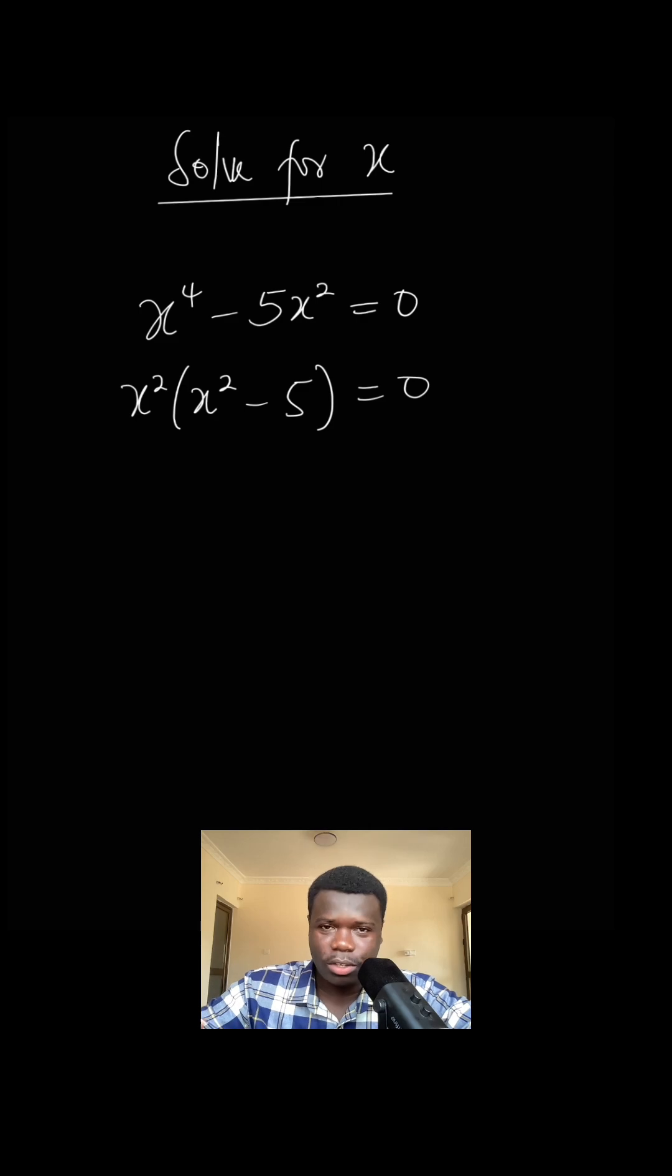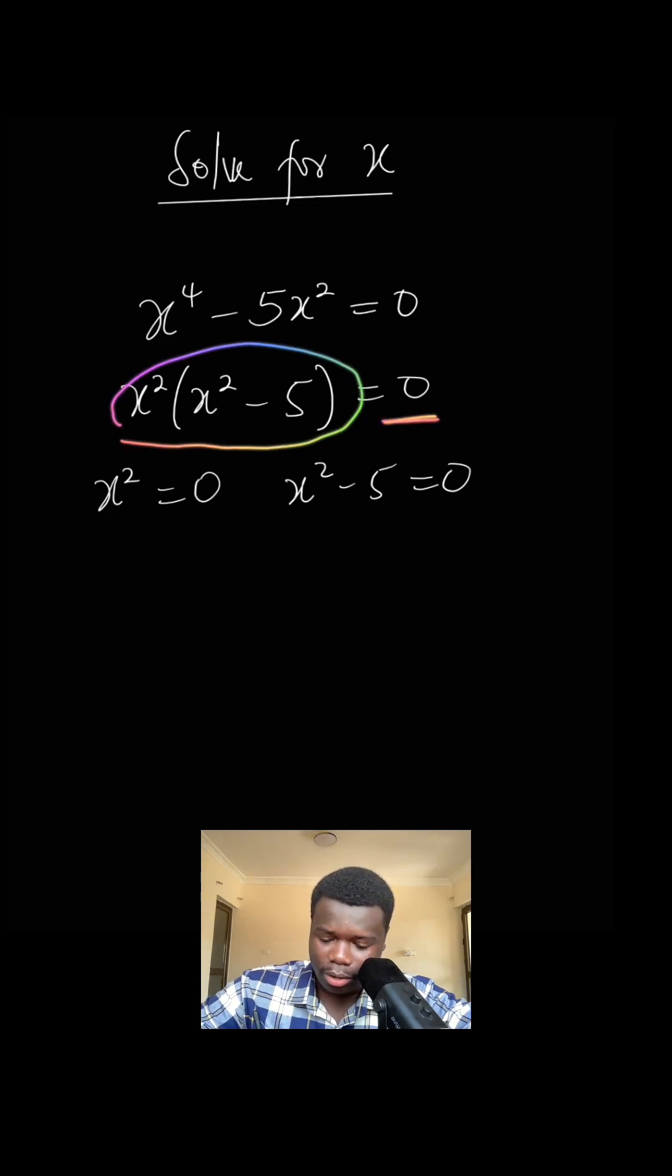When you have it this way, then you get x^2 = 0 and x^2 - 5 = 0. The reason why we do this is for this to be equal to zero. Since they are multiplying, it's either this is zero or this is zero for it to be zero.